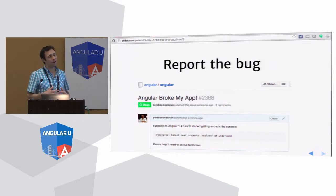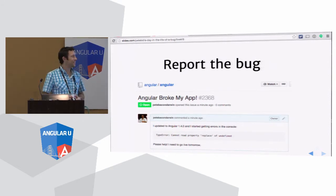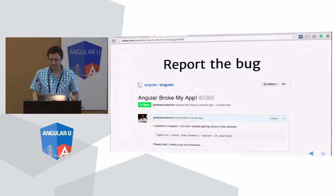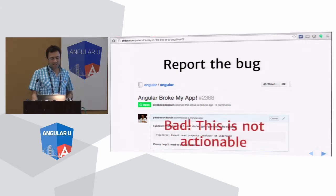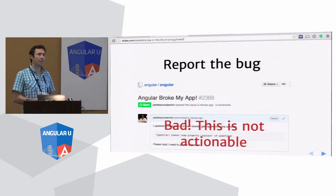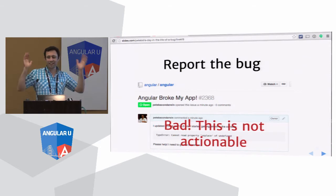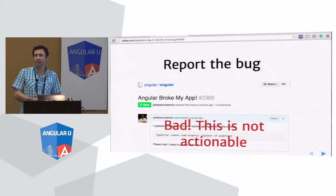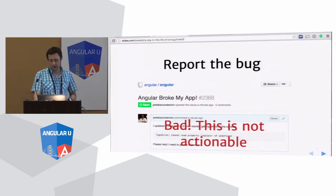Angular broke my app. So I'm going to report the bug like a diligent developer would. I don't know if you can read this, but it basically says: 'I updated to Angular 1.4 and I'm getting errors. Please help me, I need to go live tomorrow.' This is a non-actionable issue. A few months ago I'm sure I heard Misko declaring that non-actionable issues should just be closed, because there's nothing we can do about them — otherwise we're going to end up with issue bankruptcy, where you just have this flood of issues and there's not enough people to deal with them.